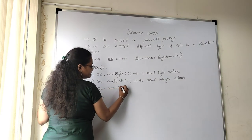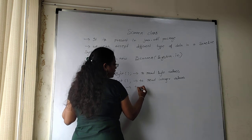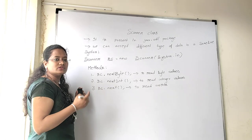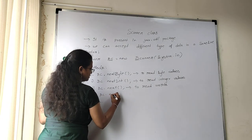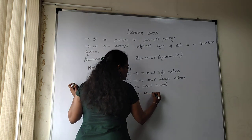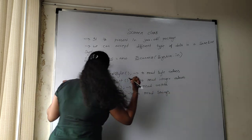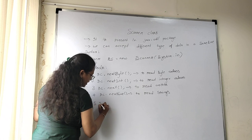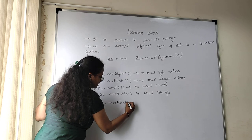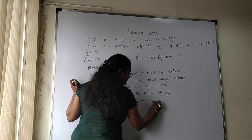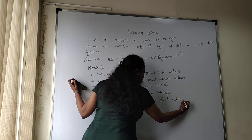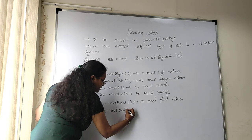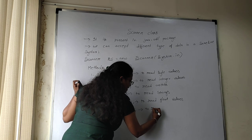The third method is `sc.next()` — to read words. Note that `next()` and `nextInt()` are different. If you want to read any words, use `next()`. If you want to read a sentence or paragraph, use `nextLine()`. Then `sc.nextFloat()` is used to read float values, and `sc.nextDouble()` is used to read double values.